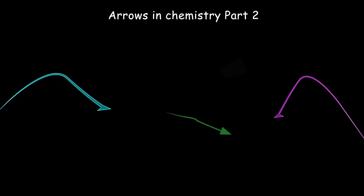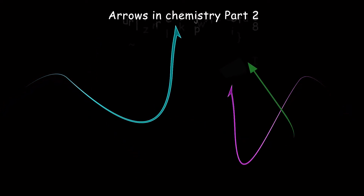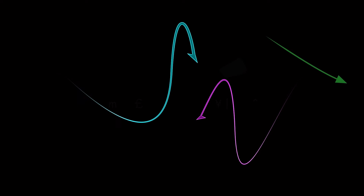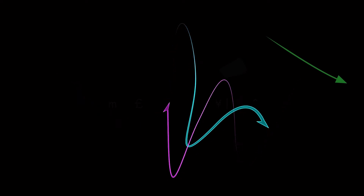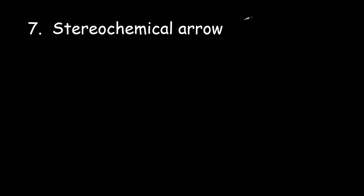This is arrows in chemistry part 2, and these arrows are more common in organic chemistry. Number 7: the stereochemical arrow. This arrow is used to identify the absolute configuration — the actual arrangement of atoms or groups of atoms around a chiral center as R or S.